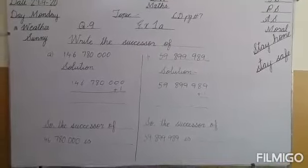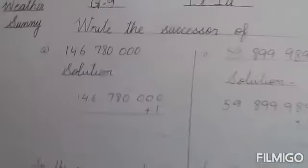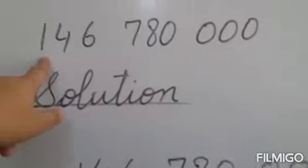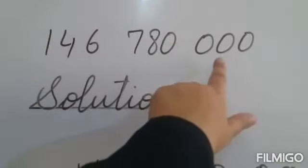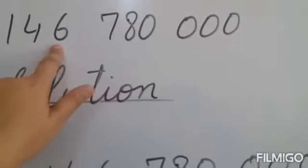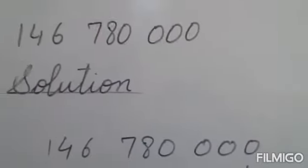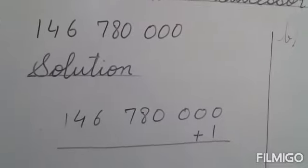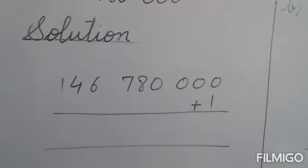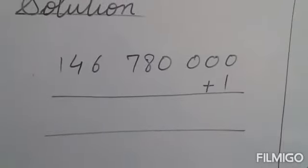Now let us do question number 9. Question number 9 is: write the successor of. Make its number name — tell me the number name first. There are 3 houses: units house, thousands house, and millions house. So this number is 146,780,000, and in the units house all digits are 0. Now recall what a successor is: a number that comes just after another number. To find the successor in big numbers, we simply add 1 to the number.